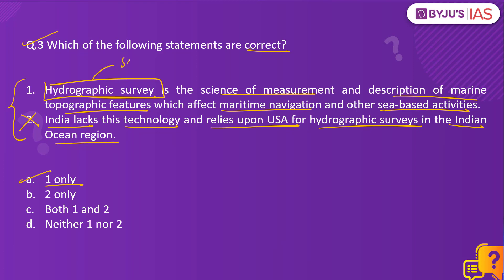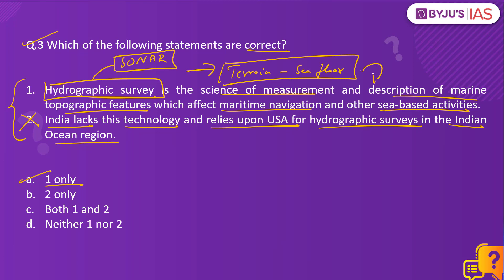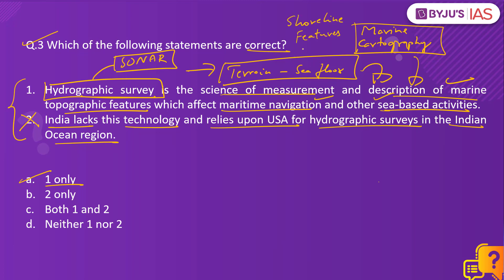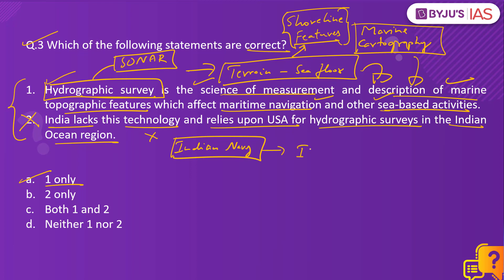Hydrographic surveys make use of sonar technology and other advanced electronic sensors to map out the terrain of the seafloor, along with other topographic features of the marine environment — this is essentially marine cartography. Such mapping is essential for maritime navigation and all sea-based activities, helping understand the shoreline, seabed terrain, and underwater features, which is absolutely essential for deploying ships and submarines. India doesn't lack this technology — in fact, India is one of the pioneers in hydrographic surveys. The Indian Navy and other scientific institutions possess this technology, and India has mapped out the terrain of the Indian Ocean region.